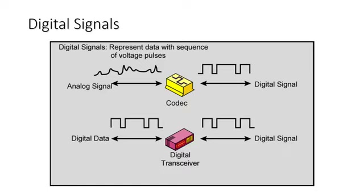Digital data can be directly represented by digital signals. A digital signal can be transmitted only a limited distance before attenuation, noise, and other impairments endanger the integrity of the data. To achieve greater distances, repeaters are used. A repeater receives a digital signal, recovers the patterns of ones and zeros, and retransmits a new signal to overcome attenuation.